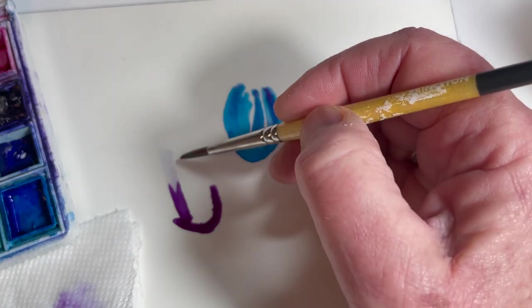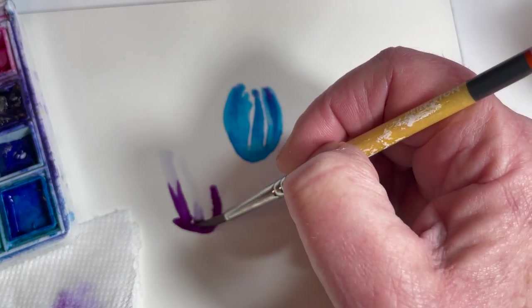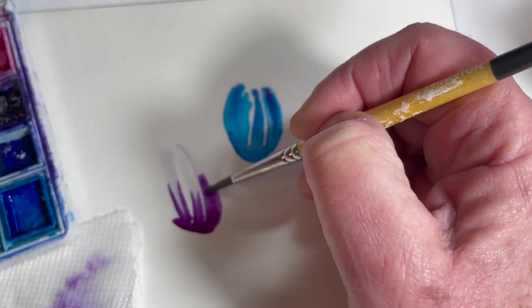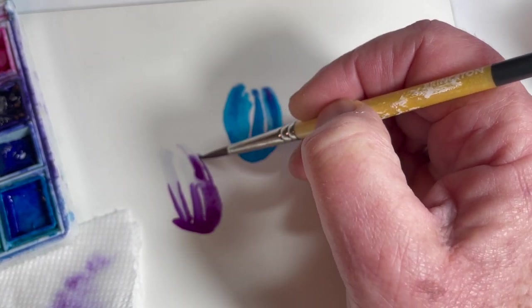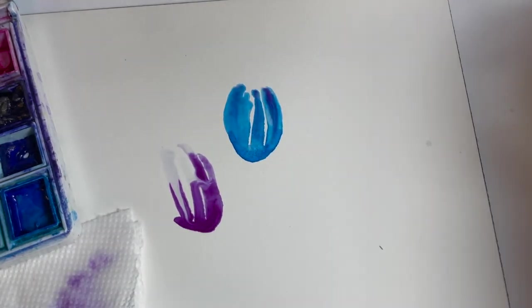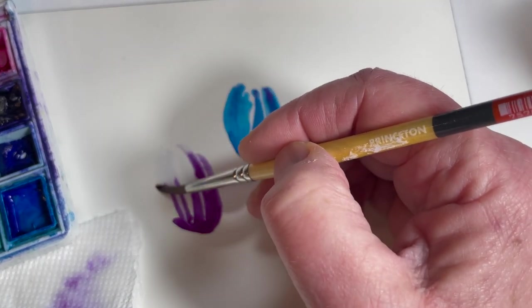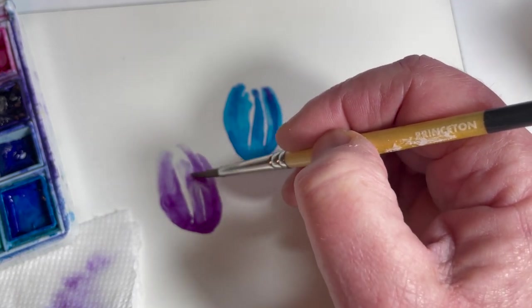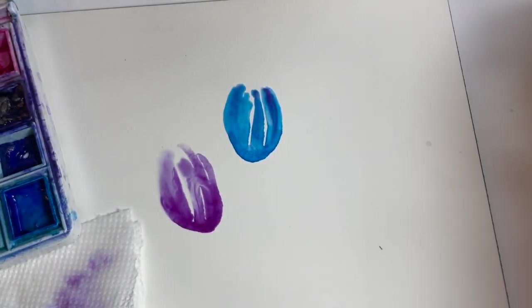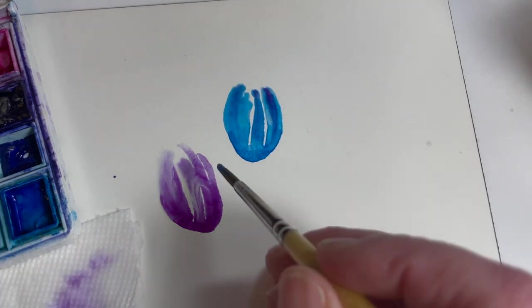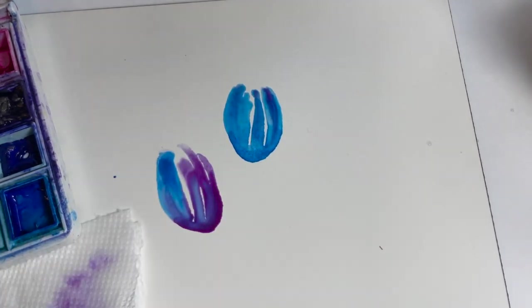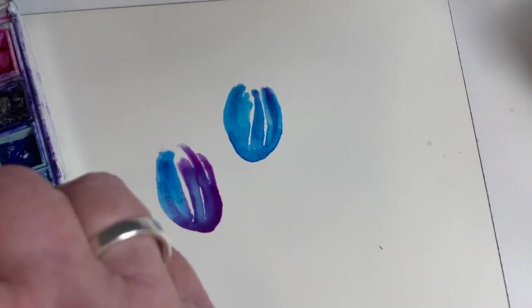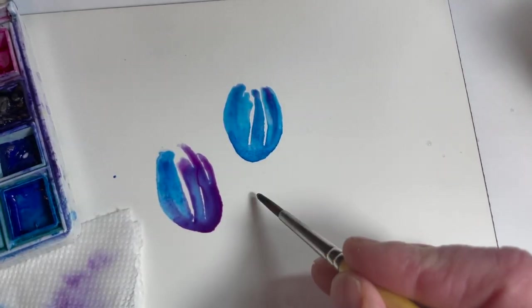And I can bring that down and kind of coax the pigment a little bit if I want. If the pigment doesn't seem to be moving that much, I can coax it and pull it where I want. But basically this is the shape of the bud. And as I mentioned, I could drop other colors in. Whoo, look at that! I love the way that just bloomed.